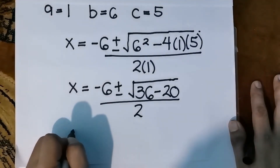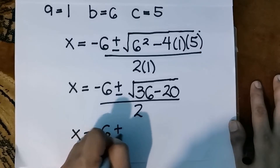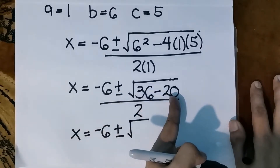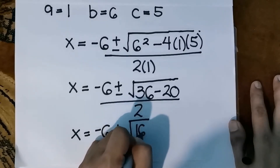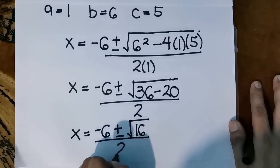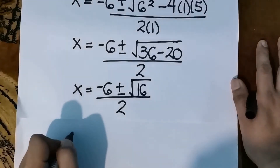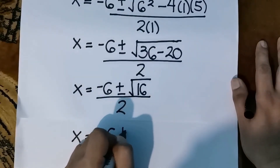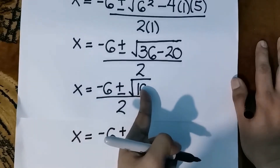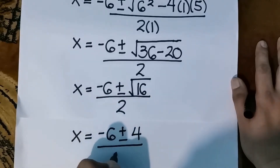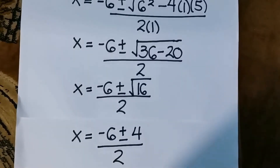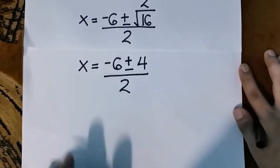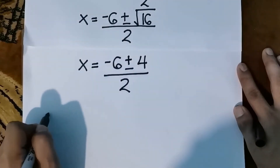Then we have x equals negative 6 plus or minus the square root of 16, which is 4, over 2. After this, we will have two solutions — one using the positive sign and the other using the negative sign.